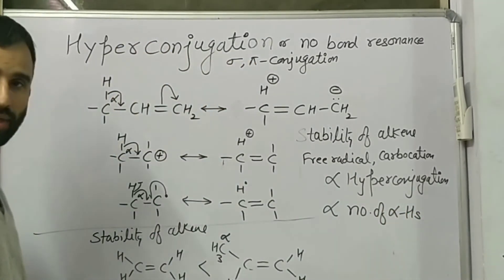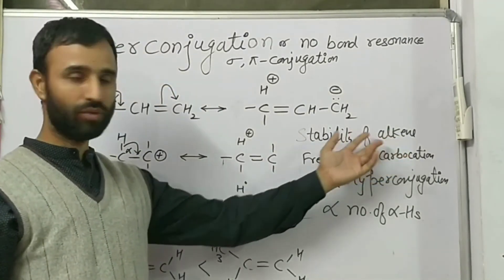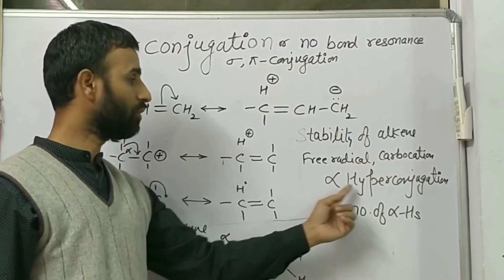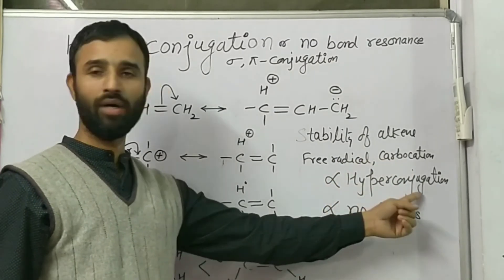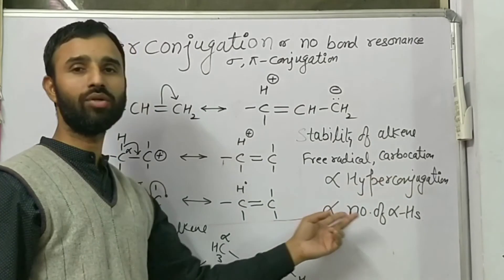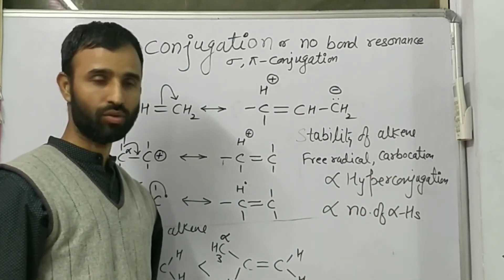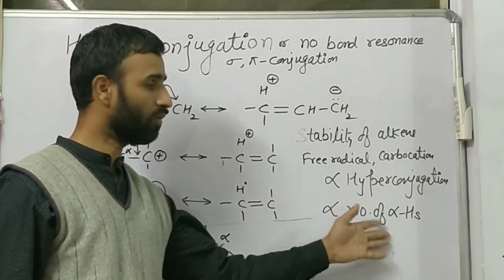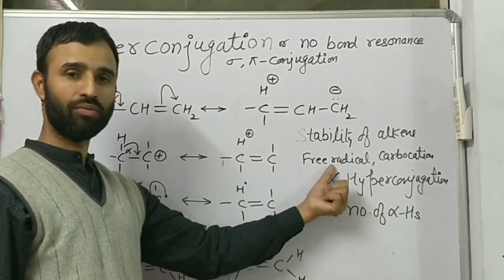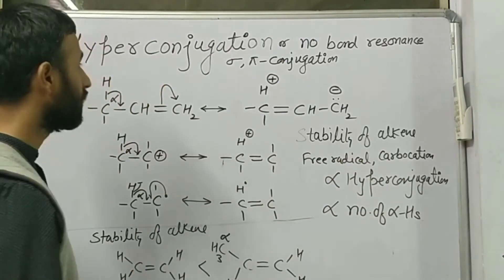Hyperconjugation is proportional to the number of alpha-hydrogens. So we can explain the stability of alkenes, free radicals, and carbocations using hyperconjugation. More alpha-hydrogens means more hyperconjugation, and therefore greater stability.